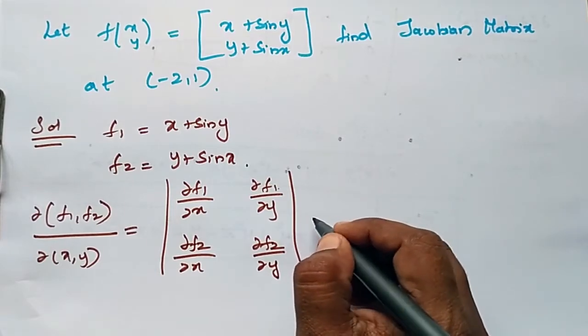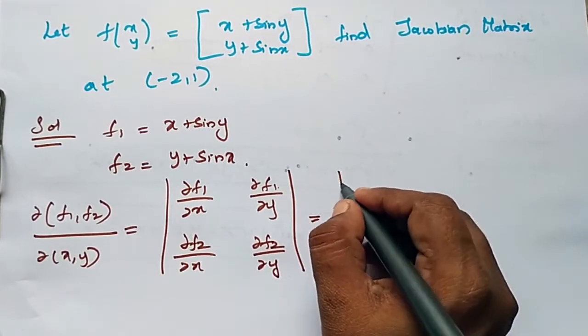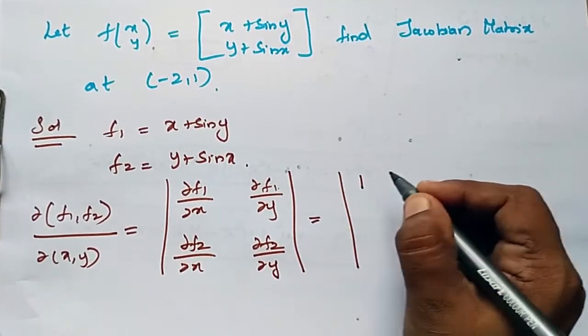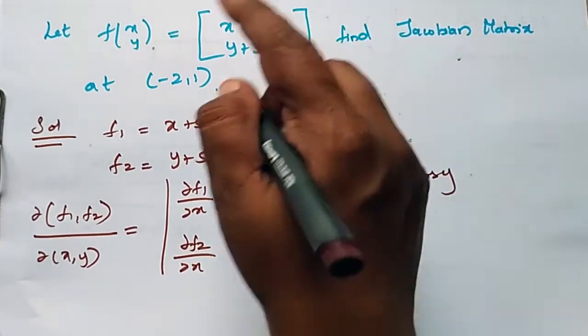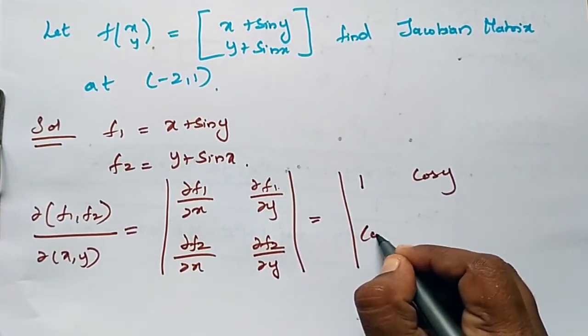Now substitute the partial derivatives: [1, cos(y); cos(x), 1].